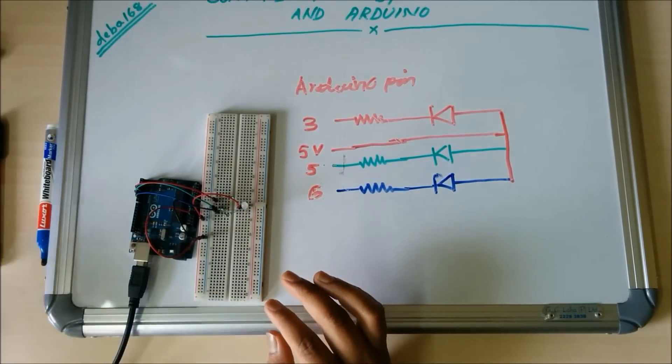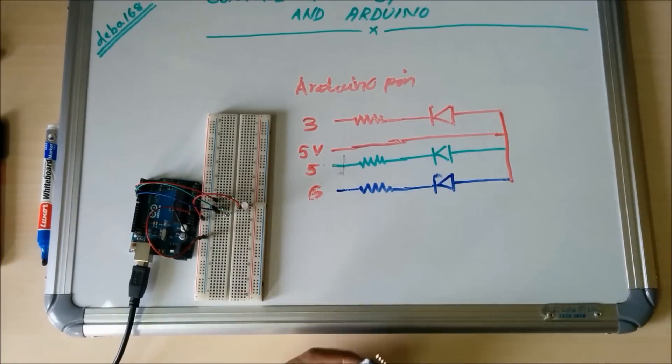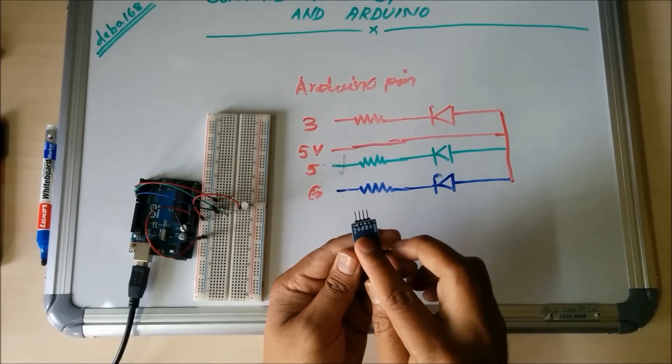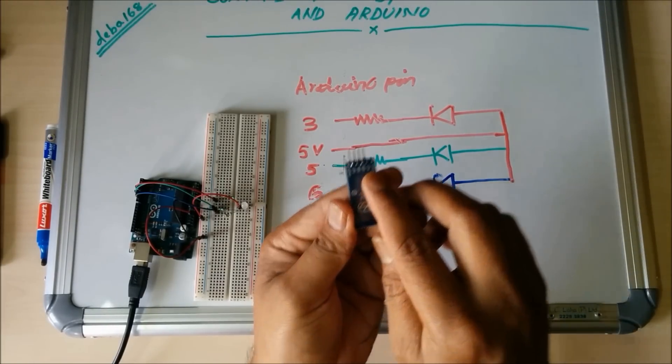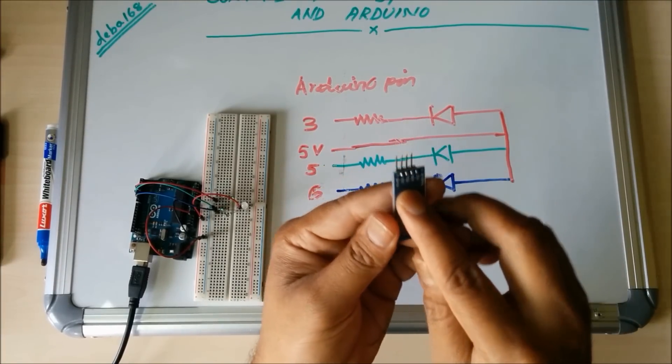We have to connect the Bluetooth module. The Bluetooth module has four pins: VCC pin, ground pin, RX pin, and TX pin.